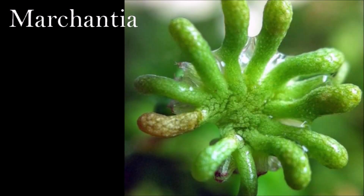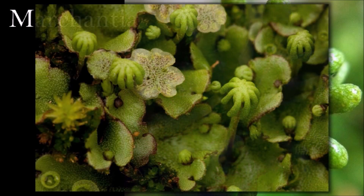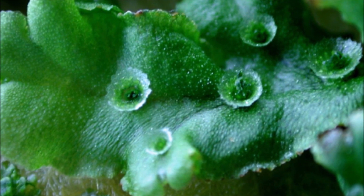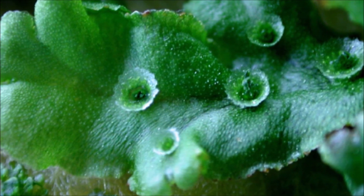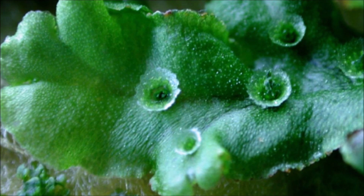Marchantia are liverworts which make up a major part of the bryophyte group. Some resemble leafy mosses while others have a flattened body called a thallus. Spores similar to those of liverworts are in evidence from the Ordovician onward, with the earliest fossils appearing in the Devonian. By the late Triassic there were forms similar to Marchantia, and many more are known from the Cretaceous and the Tertiary.